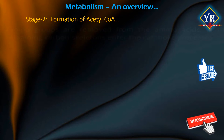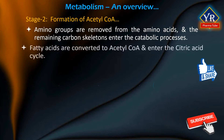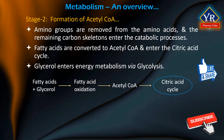Amino groups are removed from the amino acids and the remaining carbon skeletons enter the catabolic processes at many steps. Fatty acids are converted to acetyl-CoA and enter the citric acid cycle in that form. Glycerol, which is produced by the hydrolysis of fats, enters energy metabolism via glycolysis.